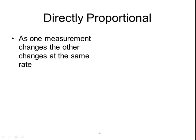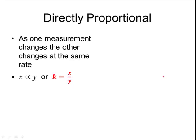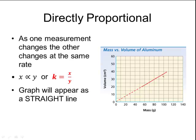The last section deals with proportional measurements. A directly proportional measurement means that as one measurement changes, the other changes at the same rate. Mathematically, x is directly proportional to y, or written as an equation, k = x/y, where k is a constant. If you divide two measurements x and y and always get the same answer, they are directly proportional. When graphed, directly proportional measurements always appear as a straight line. For example, mass versus volume of aluminum produces a straight diagonal line — mass versus volume is the same as mass divided by volume, which is density.